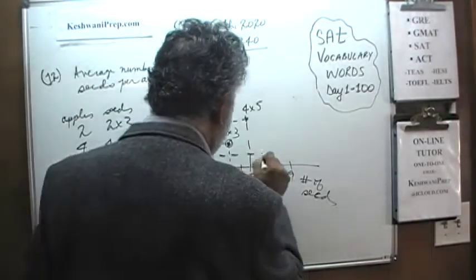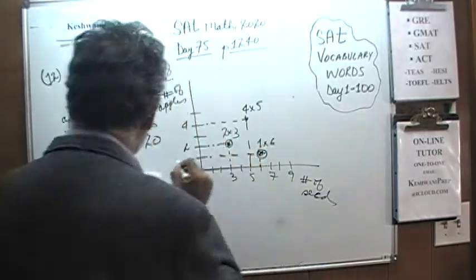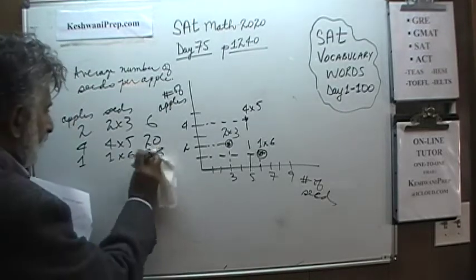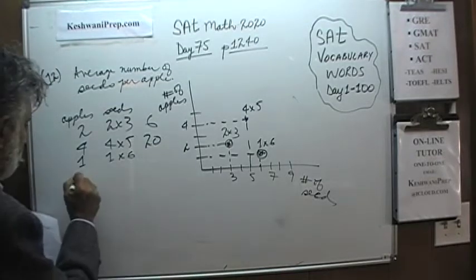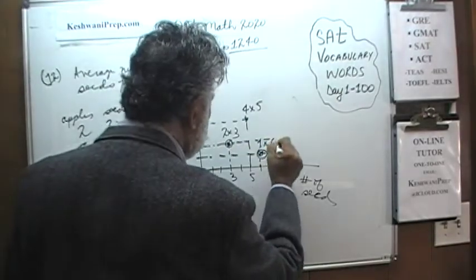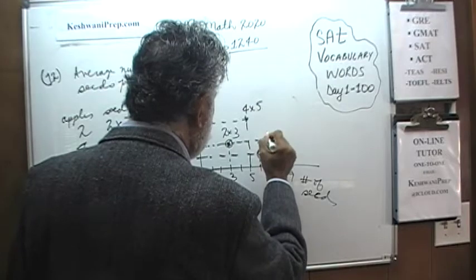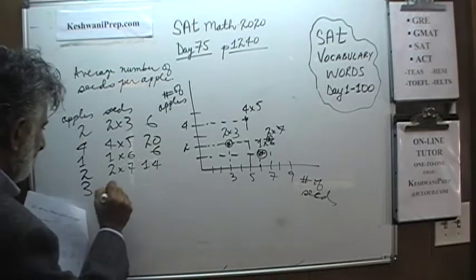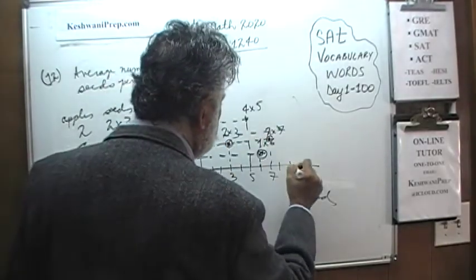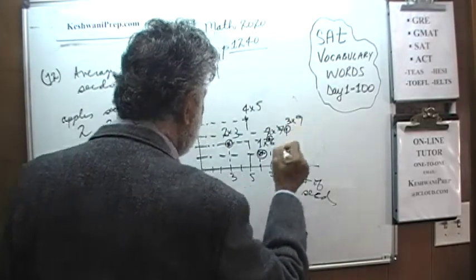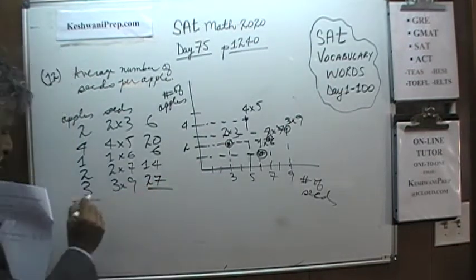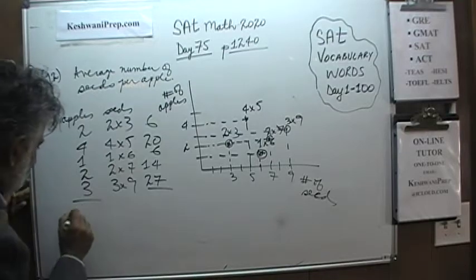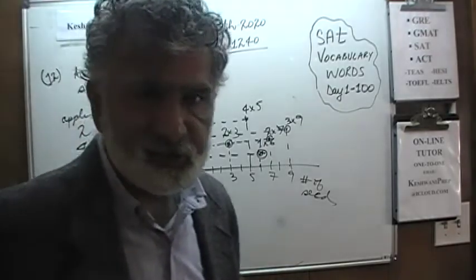Then we have 1 apple with 6 seeds. Then 2 apples with 7 seeds — that's 14 seeds. And finally 3 apples with 9 seeds — that's 27 seeds. Let's first figure out how many apples we have: 2 plus 4 is 6, plus 1 is 7, plus 2 is 9, plus 3 is 12. So we have 12 apples total. Now let's see how many seeds these 12 apples contain.